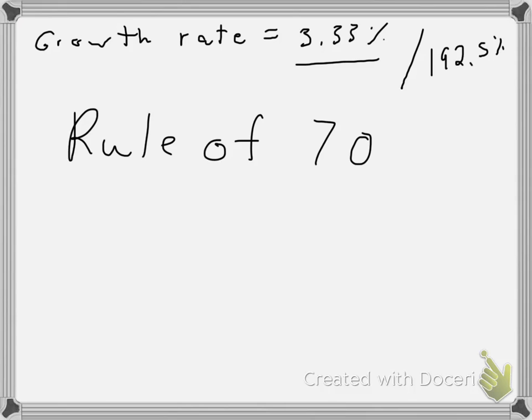That will tell you how long it's going to take for your amount to double. Right now, my savings account is earning 1%, so it would be 70 divided by 1 equals 70, so it would take me roughly 70 years. That's the equation for the Rule of 70: 70 divided by your growth rate or your interest rate.